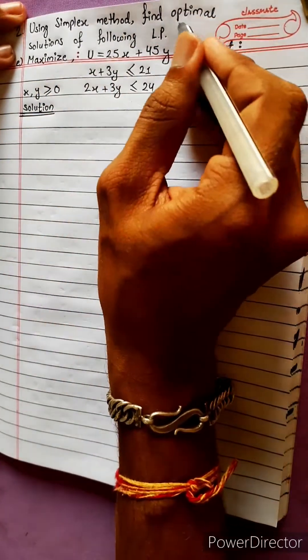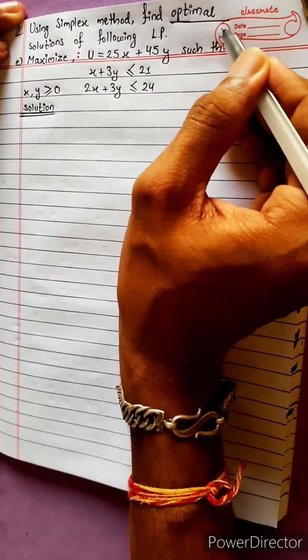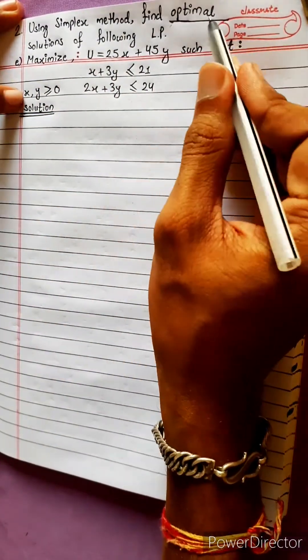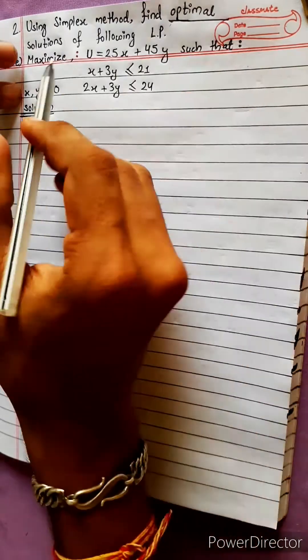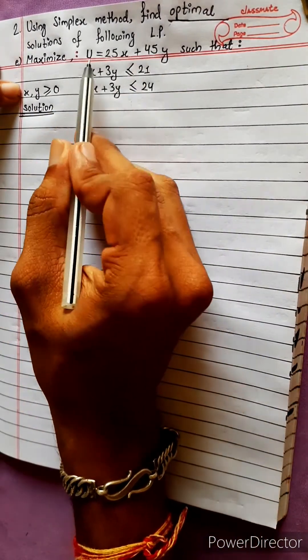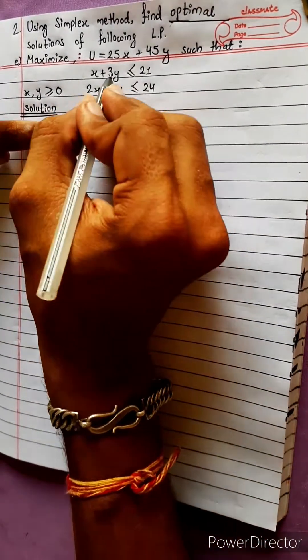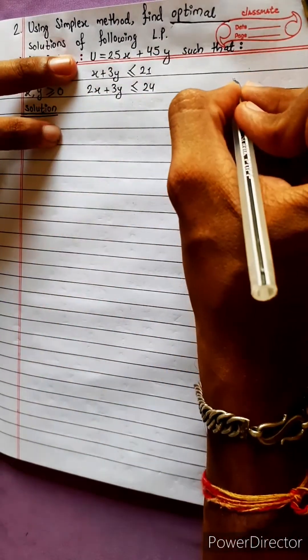Using the simplex method, find the optimal solution. The optimal solution means the third row elements are positive. We follow linear programming problems. Let's start with this concept.